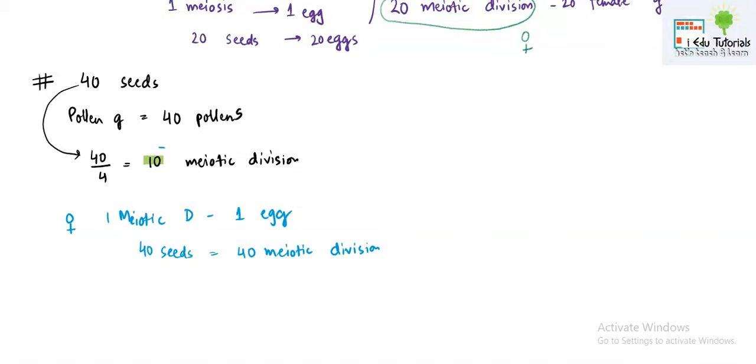40 meiotic divisions because one meiotic division is forming just one egg and when one egg fuses with one male gamete or one pollen, then only a seed is there with the embryo. So we have calculated the major part. Now we have to add the values and our answer will become 10 plus 40 makes 50. That means for forming 40 seeds, we require 50 meiotic divisions to happen.